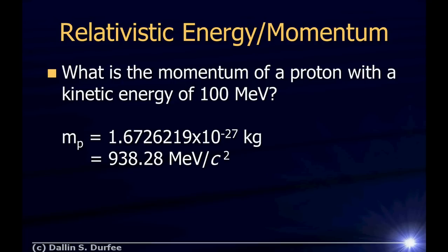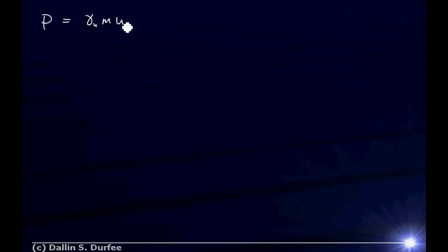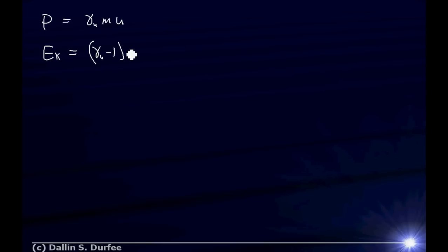Next problem: what is the momentum of a proton with a kinetic energy of 100 MeV? I'm giving you the mass of the proton. The momentum is γ_u m u, so if I can find the velocity of the particle when it has that kinetic energy, I can plug that into γ_u and compute the momentum. I know the kinetic energy is 100 MeV, and the kinetic energy equals (γ_u − 1) mc². So I need to solve this for velocity.